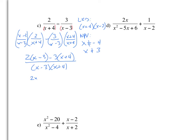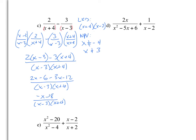Distributing gives us 2x minus 6 minus 3x minus 12, divided by x minus 3 times x plus 4. Combining like terms: negative x minus 18 over x minus 3 times x plus 4. There is a common factor of negative 1, so factor that out to get negative 1 times x plus 18, over x minus 3 times x plus 4. Since x plus 18 is not a factor in the denominator, you cannot simplify further — this is your simplified expression.